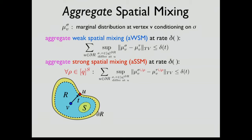We define aggregate spatial mixing by summing the extremal influence of each boundary vertex on the marginal at v over all boundary vertices. If this quantity decays, we have aggregate weak or strong spatial mixing (AWSM or ASSM). ASSM implies SSM, but SSM does not imply ASSM in general, because a path alone usually has much slower correlation decay than a path hidden in a tree. By an elegant coupling argument, ASSM implies optimal mixing time for Glauber dynamics.